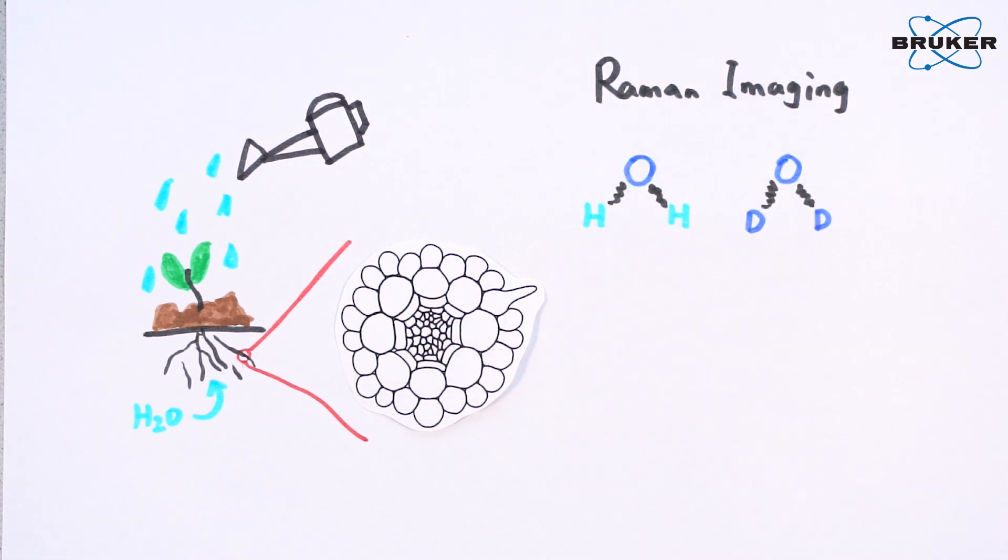For this, the researchers used so-called heavy water. Here, each hydrogen atom carries an extra neutron but remains chemically equivalent to water.